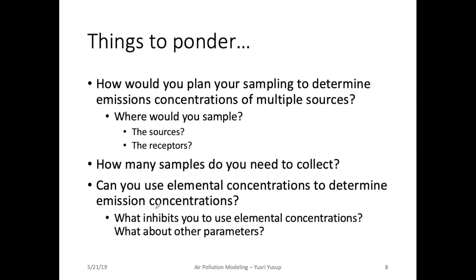We use elemental concentrations to determine the source. Once you collect the sample, you need to send it for elemental analysis, as this is the simplest way to get as many parameter or variable concentrations within the main sample — such as lead, cadmium, and nickel elements. The more elemental concentrations you have, the more sources you can determine emission concentrations for. However, you would also need to know the emission composition for each source, which complicates the sampling method.